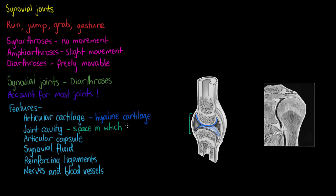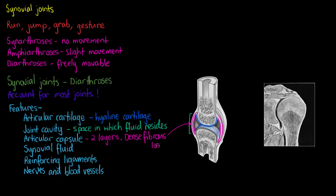The joint cavity is a unique feature of synovial joints and refers to the space in which we find the synovial fluid. To hold that fluid in place, we have the articular capsule, which contains two layers of connective tissue: a thin inner synovial membrane made of loose connective tissue, and an outer fibrous capsule of dense irregular connective tissue. The synovial membrane covers all surfaces that the hyaline cartilage does not, helping create a seal within the joint cavity.